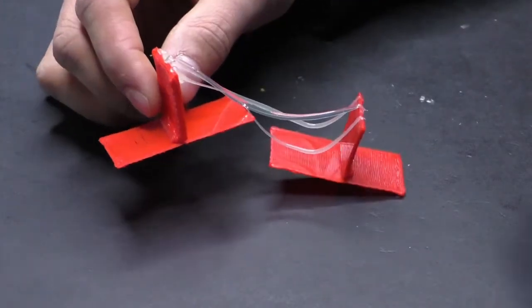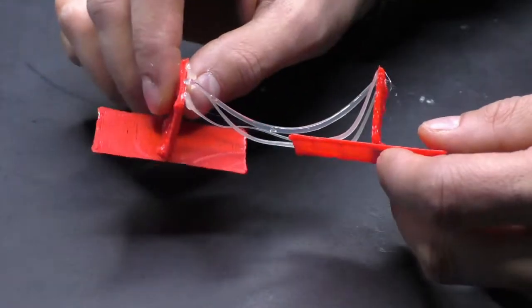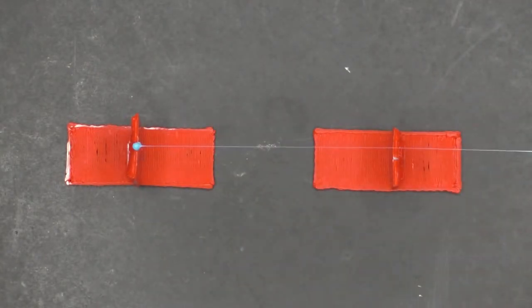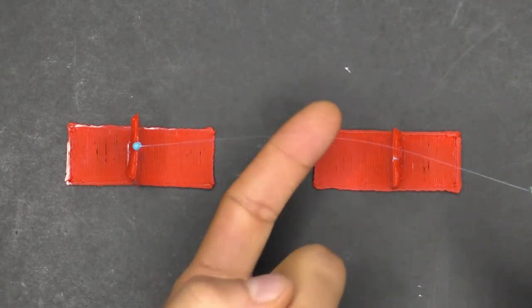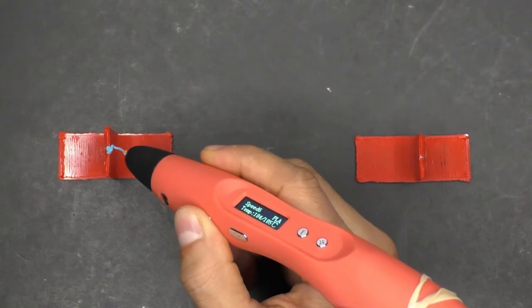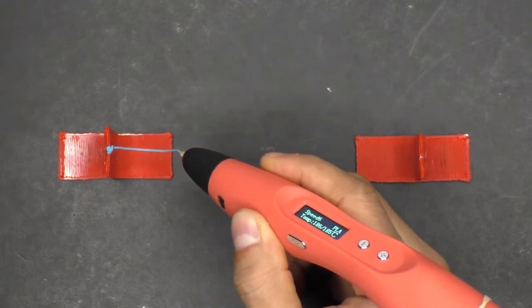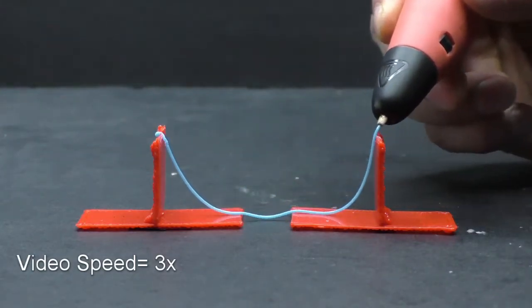So what else can you do to keep the stretching under control? Well, you have a number of options. The first is fine tuning your hand speed. Move too fast and this happens. You have to find the hand speed that is just right because if you move too slow, you get major sagging like this.